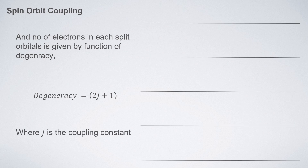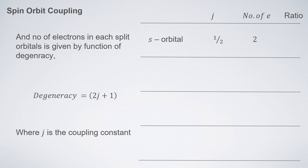For s orbitals, j is one-half, so degeneracy equals 2(1/2) + 1 = 2. That means both electrons in the s orbital have the same degeneracy. For p orbitals, when j equals three-halves, degeneracy is 4, and when j equals one-half, degeneracy is 2. This means the six total p electrons are split into two groups: 4 electrons with one energy and 2 with another, giving a peak intensity ratio of 2:1.